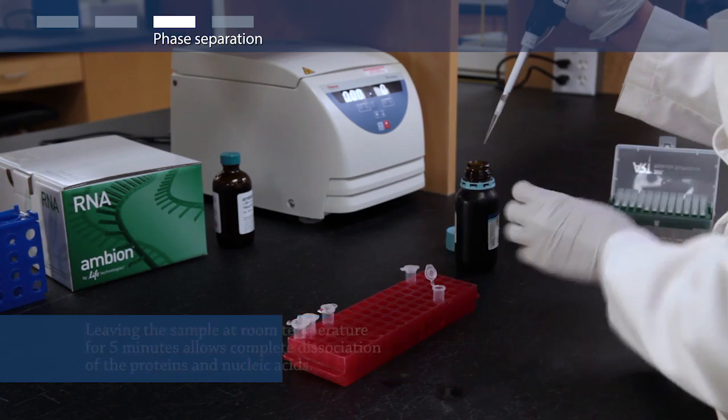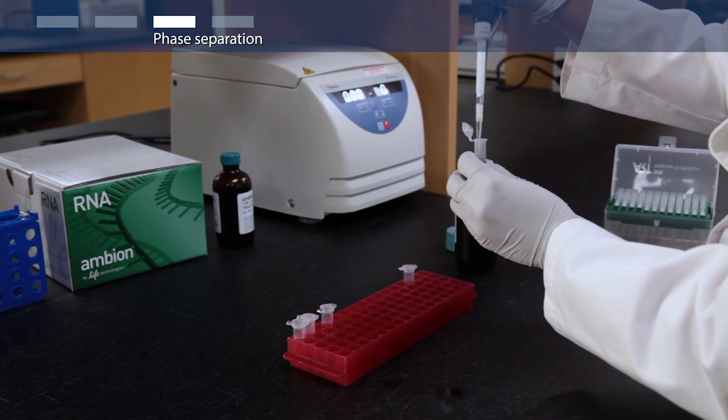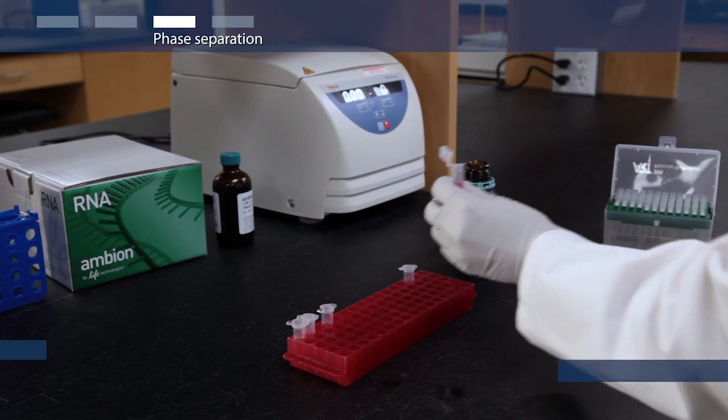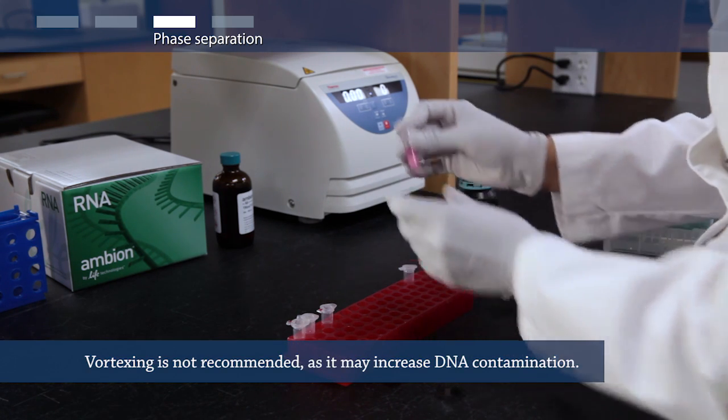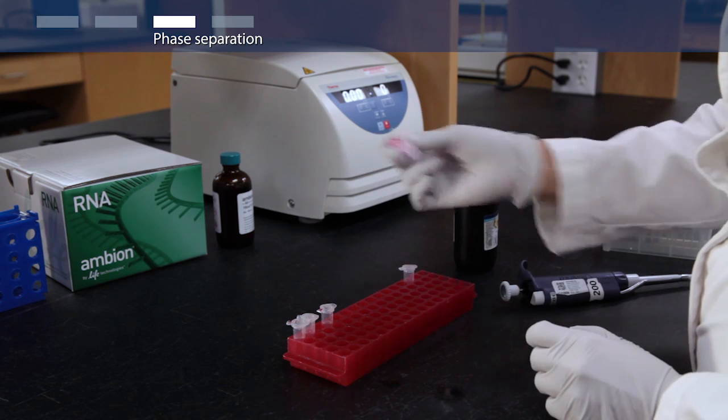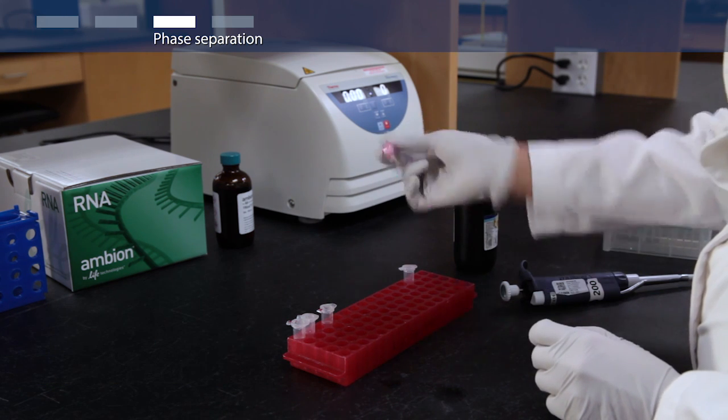Next, add 0.2 ml of chloroform and shake the tube vigorously for about 15 seconds. Then let the tube sit for 2 to 3 minutes at room temperature.